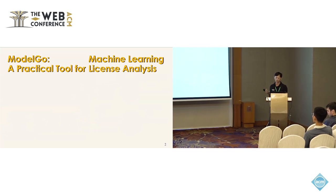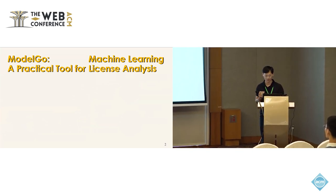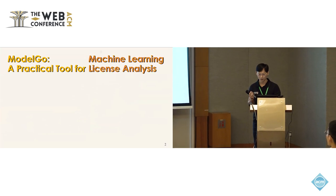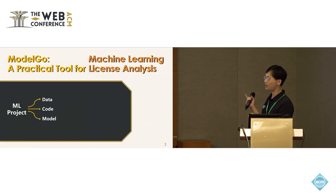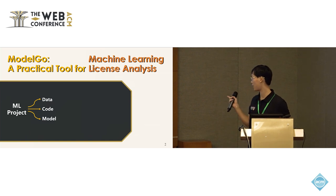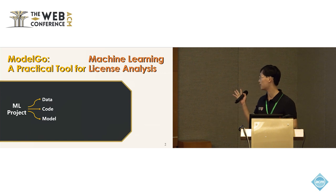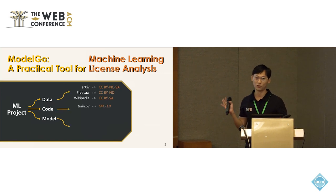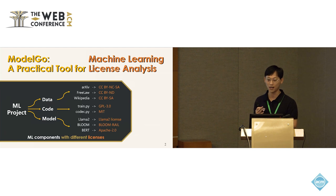So, what is machine learning license analysis? Machine learning projects have three types of components: data, code, and model. Each of these components has a different type of license.